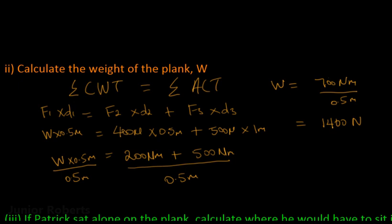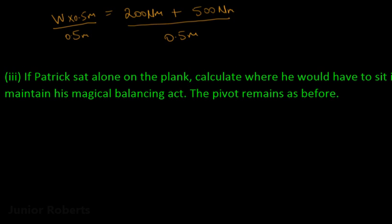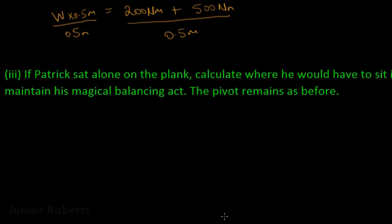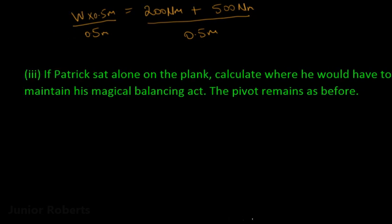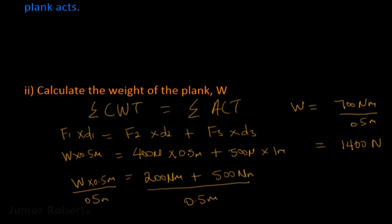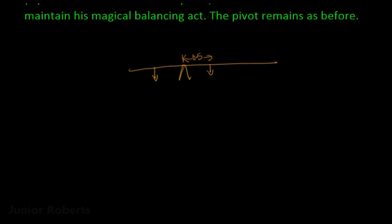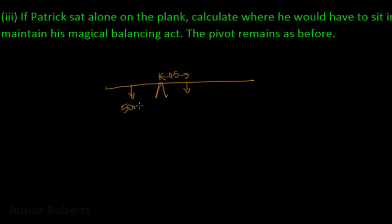The next part of the question says: if Patrick sat alone on the plank, calculate where he would have to sit to maintain the magical balancing act. We redraw the plank: the weight W = 1400 N acts 0.5 meters from the pivot, and Patrick's weight of 500 N is on the opposite side at an unknown distance d2.